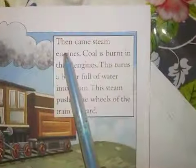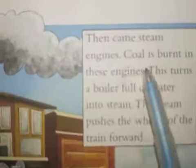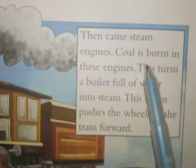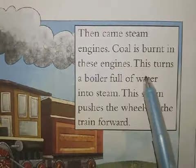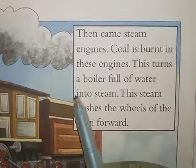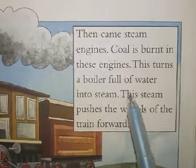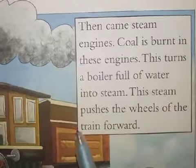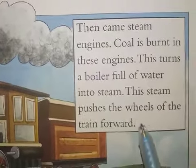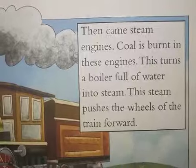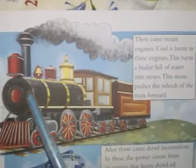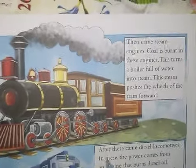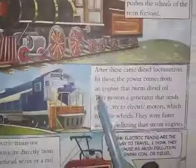Then came steam engines. Coal is burned in these engines, which turns a boiler full of water into steam. This steam pushes the wheels of the train forward. The boiling water produces steam that pushes the train along.